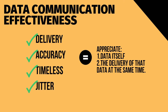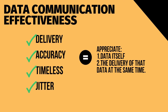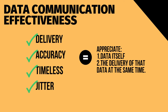First, delivery: the system must deliver data to the correct destination, and data must be received by the intended device. Second, accuracy: the system must deliver the data accurately — data that have been altered in transmission and left uncorrected are unusable. Third, timeliness: the system must deliver data in a timely manner, as data delivered late are useless. In the case of video and audio, timely delivery means delivering data as they are produced, in the same order they are produced, and without significant delay — this is called real-time transmission. Fourth, jitter refers to the variation in the packet arrival time; it is the uneven delay in the delivery of audio or video packets.